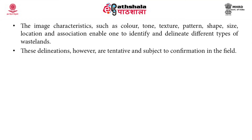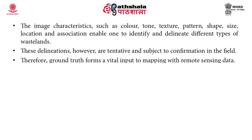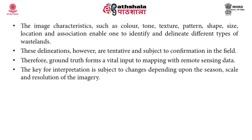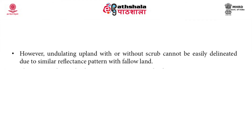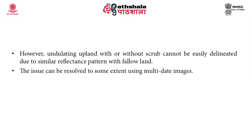These delineations are tentative and subject to confirmation in the field; therefore, ground truth forms a vital input to mapping with remote sensing data. The key for interpretation is subject to change depending upon the season, scale and resolution of image. Certain categories of wasteland like salt affected land, waterlogged or marshy land and sandy areas can be easily delineated by virtue of their spectral separability, pattern and location, whereas gullied or ravenous land and shifting cultivation can be delineated with moderate success. However, upland with or without scrub cannot be easily delineated due to similar reflectance pattern with fallow land, though the issue can be resolved to some extent using multi-date images.